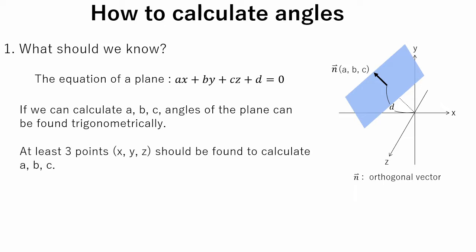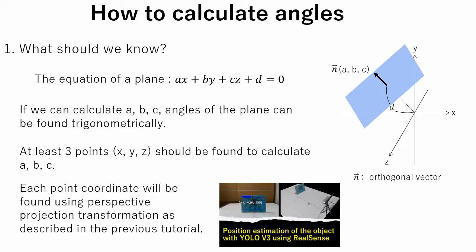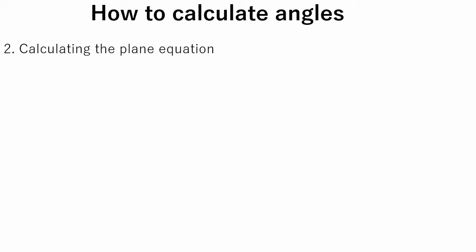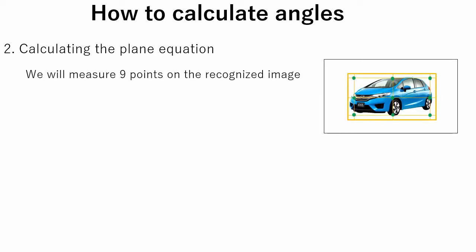Since we have three variables, coordinates of at least three points have to be found. Each point coordinate will be found using perspective projection transformation — see the previous tutorial for reference. Using only three points could be unreliable, because if one point accidentally goes out of the boundary of the object, the plane normal vector will not be calculated correctly. So, as shown in the figure on the right, nine points will be used to calculate the normal vector. Even if several points have an abnormal value compared to others, it is easy to create a program that excludes those points from the calculation.